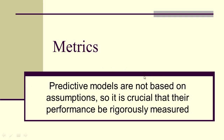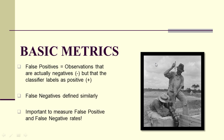Predictive models are not based on assumptions, so it's crucial that their performance be rigorously measured. Let's look at some basic metrics, and these are going to be based on the concept of false positives — observations that are actually negative but that the classifier incorrectly labels as positive. False negatives are similar, and we're going to measure rates at which false positives and false negatives occur.